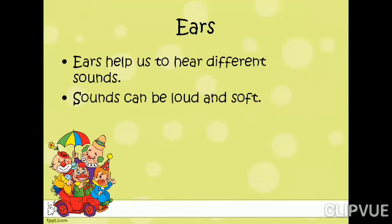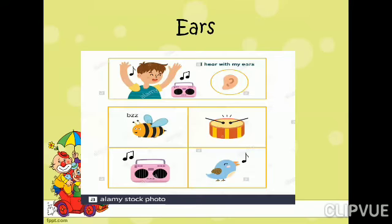Now we are going to discuss about the ears. Ears help us to hear different sounds. Some sounds are very loud and some sounds are soft — it means they are slow. We can hear different types of sounds with the help of our ears. You can hear the buzzing of a bee, the drums, the radio, and birds singing.